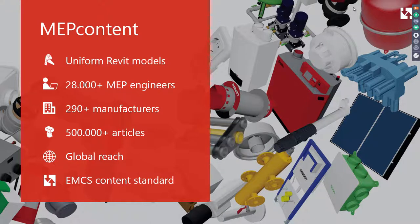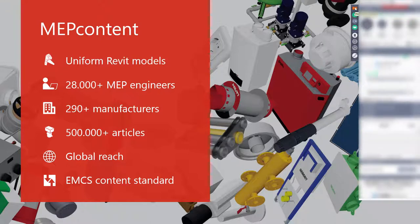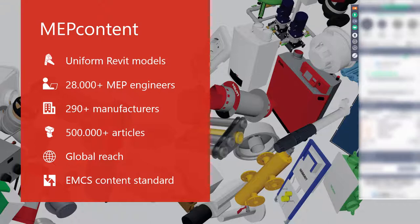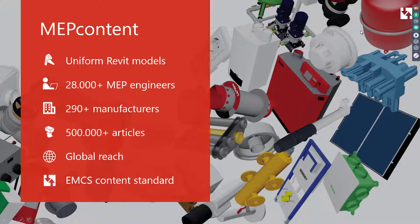You can see on the screen some figures. MapContent has now been active for more than 17 years. We publish Uniform Revit Models on the MapContent website. On a monthly basis, more than 28,000 engineers are visiting this website, and they have access to more than 500,000 articles from more than 290 manufacturers. The content is available globally — everybody around the globe can download the content for free. It's all been made to the EMCS content standard, and we will go into EMCS in depth later on.